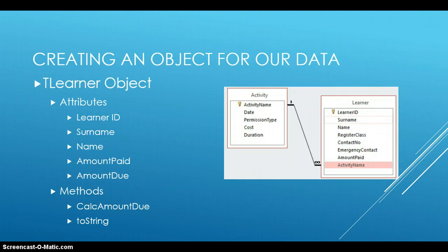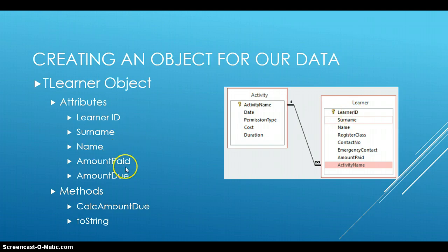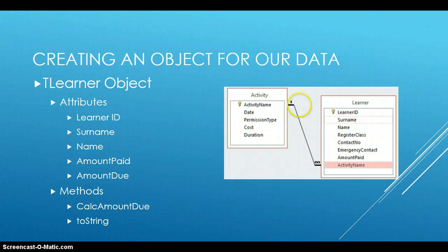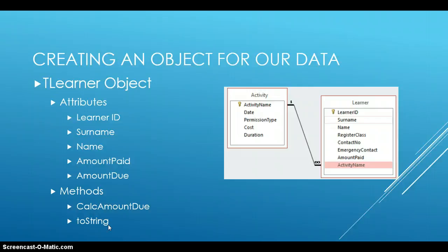We're going to keep with the learner example from throughout the series and create an object called TLearner. The attributes we'll store are learner ID, surname, name, amount paid, and amount due (how much they still need to pay). The methods we'll create are: a calculate amount due procedure (which calculates what's still owed based on cost of the activity minus amount paid), a to string method to display data nicely, and a constructor.